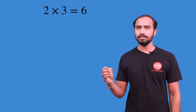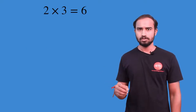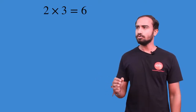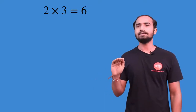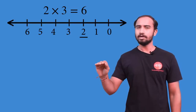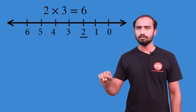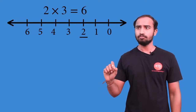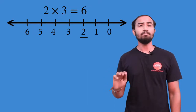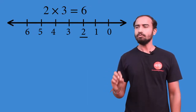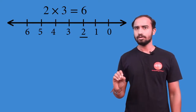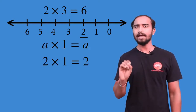Let's take 2 × 3. So 2 × 3 is 6. First of all, at the starting point, we are at number 2 on the number line. Now we have to multiply, and we all know how multiplication works.